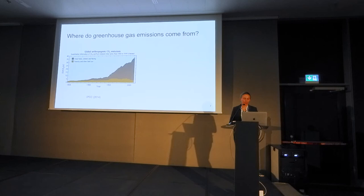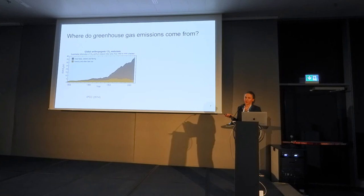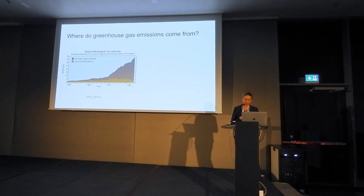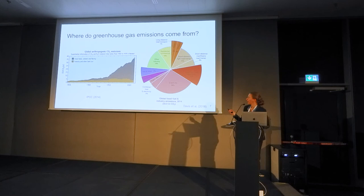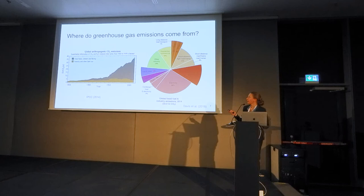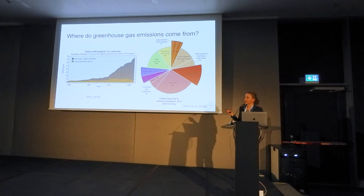Let's look at where CO2 emissions come from. This plot shows global CO2 emissions since 1850 — the light part shows emissions from land use, and the dark part shows emissions from fossil fuel use and industry, which have been increasing significantly. Another plot shows where in the economy those emissions come from globally: electricity generation is the largest share in red, followed by transportation in orange, then buildings and other industrial activities. The plot also highlights areas that are hard to decarbonize, meaning we have few technological solutions for those emission sources.